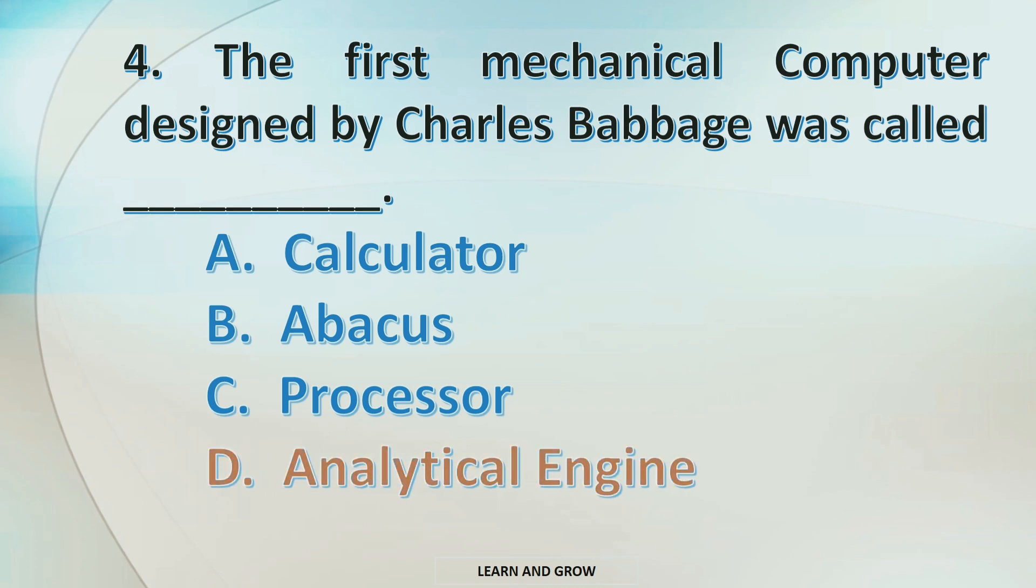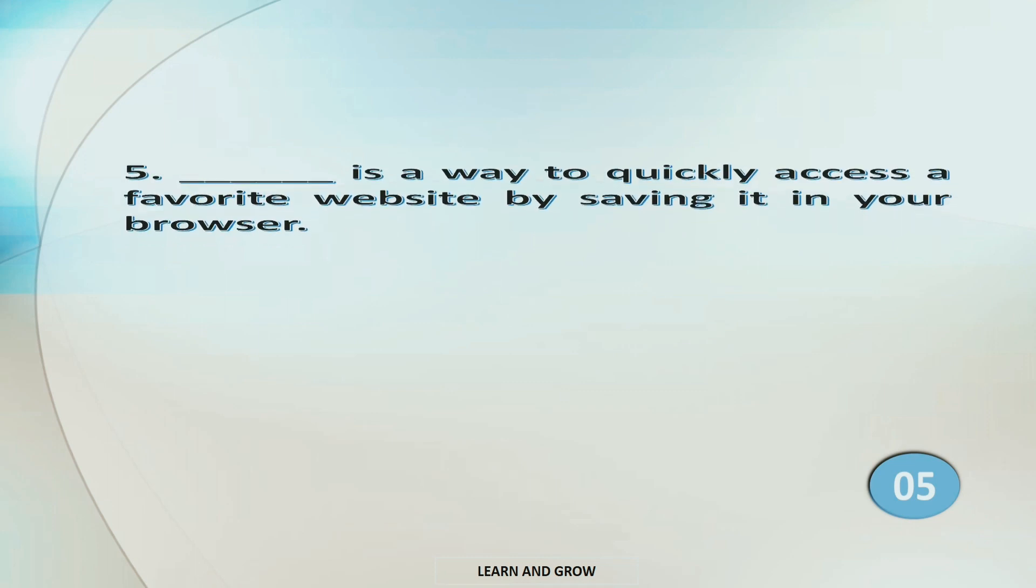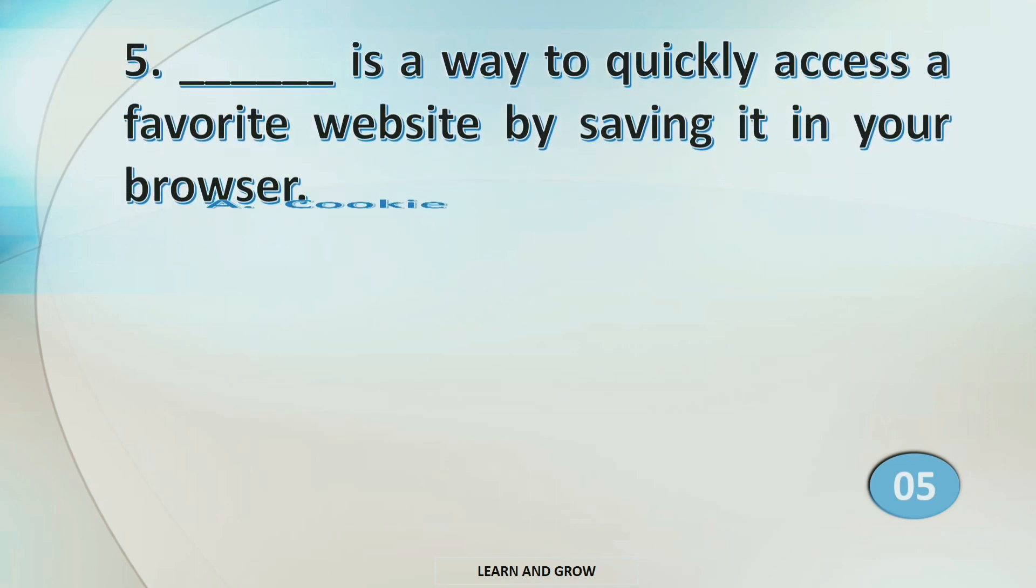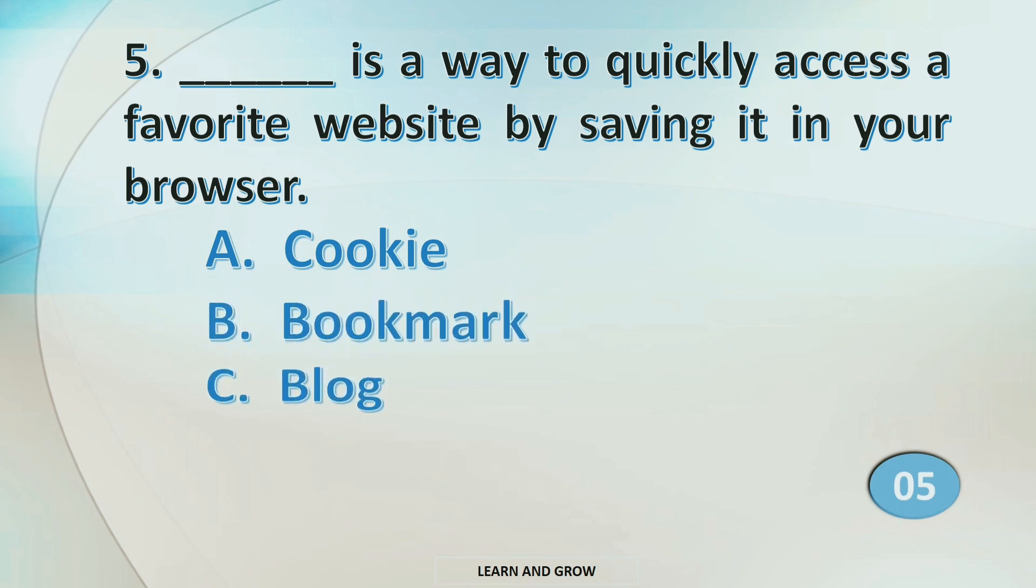The right answer is option D: Analytical Engine. Blank is a way to quickly access a favorite website by saving it in your browser. Option A: Cookie, B: Bookmark, C: Blog.